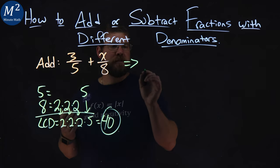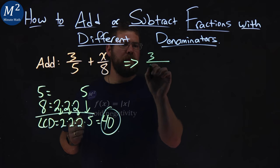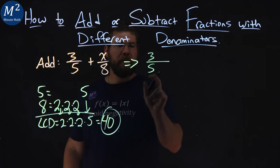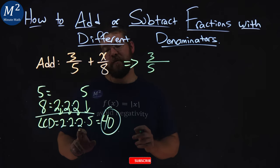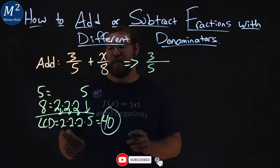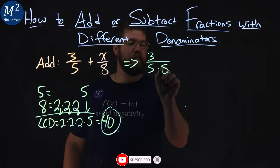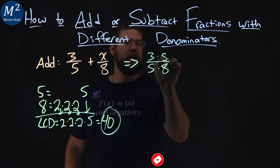So let's go rewrite these fractions out here. Three-fifths here, well, five times a two times two times two gives me the 40, which is an eight. So three times an eight in the numerator here.